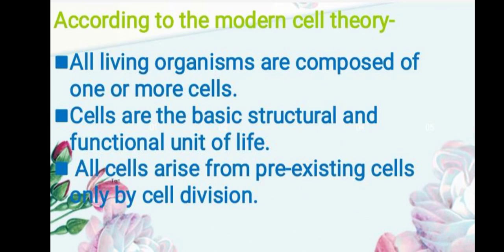We can summarize cell theory as: all living organisms are composed of one or more cells; cells are the basic structural and functional unit of life; all cells arise from pre-existing cells only by cell division. The first two postulates were given based on research by Schleiden and Schwann, whereas the third postulate was added by Rudolf Virchow.